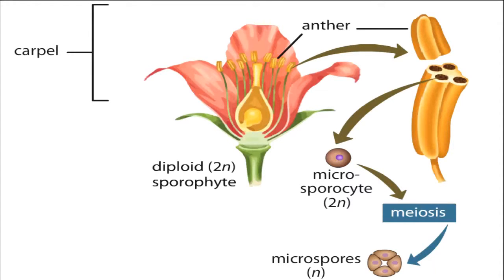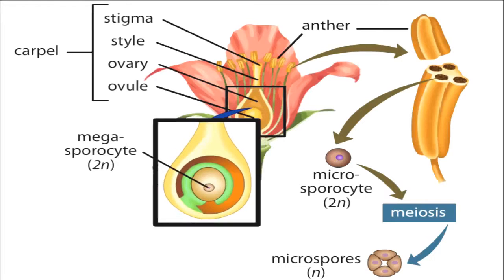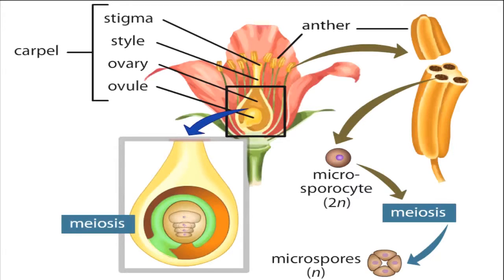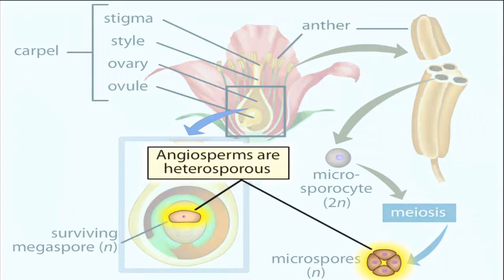In this example, the single carpel consists of a stigma, style, ovary, and ovule. A single diploid megasporocyte exists in the ovule and divides by meiosis to produce four haploid megaspores, only one of which survives. By producing two different types of spores — the microspores and megaspores — angiosperms and all other seed plants are considered heterosporous.